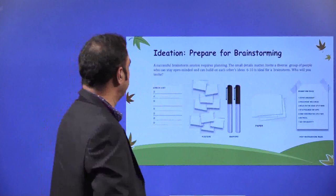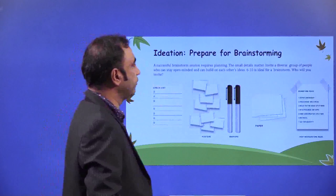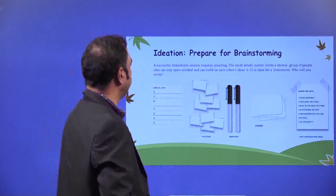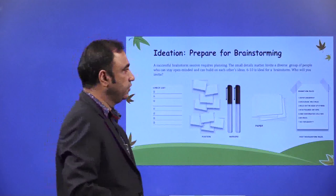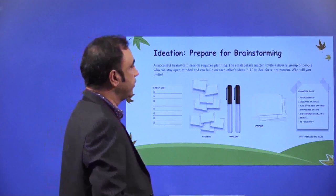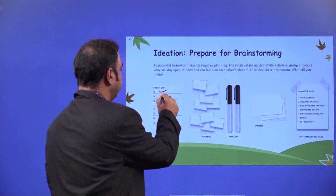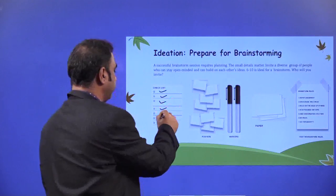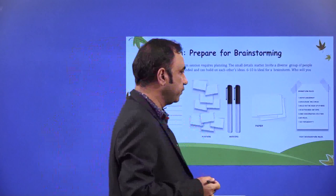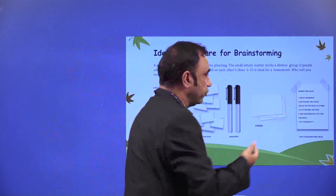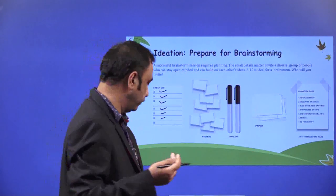Again prepare for brainstorming. A successful brainstorm session requires planning; the small details matter. Invite a diverse group of people who can stay open-minded and can build on each other's ideas — six to ten is ideal. Create a checklist of what you need for your brainstorming session: pens, markers, posters, papers. Document the rules if you have any rules for your brainstorming session — you need to define those rules as well.